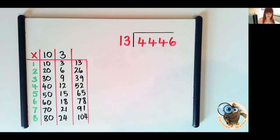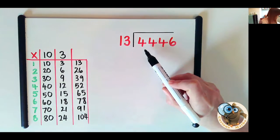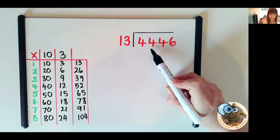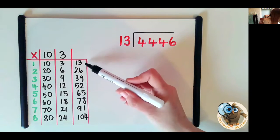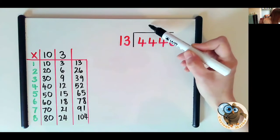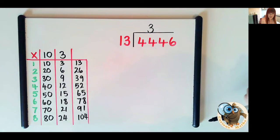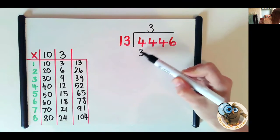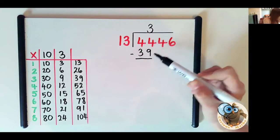Right so now we can start dividing. So how many 13s in 4? That's not going to work so we're going to look at the two digits together. How many 13s in 44? Let's look at our list. So it must be three 13s in 44. So that's just the same as the short division but the difference is we write that 39 underneath and we take it away because we're taking away groups of 13.